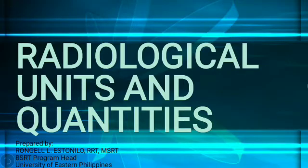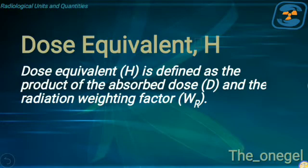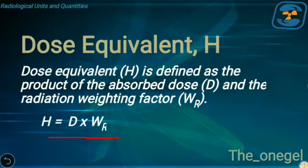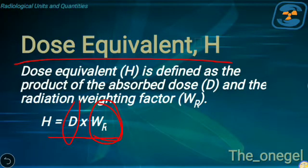Let's move on to the next quantity: dose equivalent, symbolized by capital H. This is defined as the product of absorbed dose and the radiation weighting factor, given by the formula H = D × WR. For every type of radiation, there is a weighting factor. The absorbed dose refers to the radiation received by the patient, while dose equivalent refers to the dose received by radiation workers.